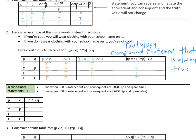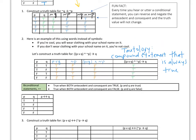Now we're going to move on to biconditional statements. Biconditional statements use the double-sided arrow and it's the if and only if. Biconditional statements are true when both the antecedent and consequent are true, and also true when both the antecedent and consequent are false. The biconditional is true when the components have the same truth value.